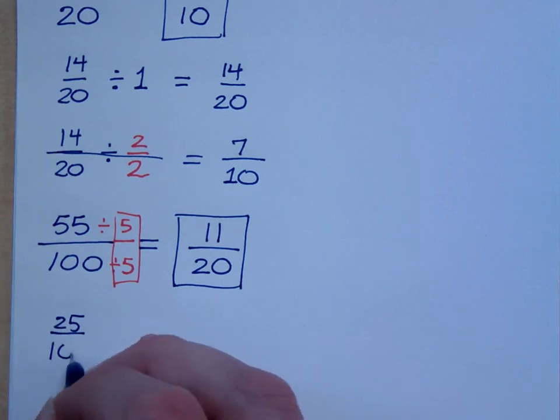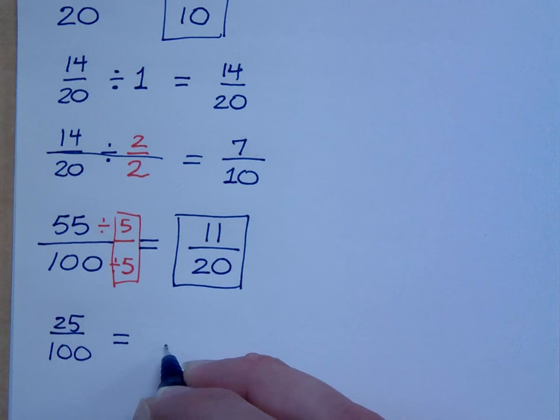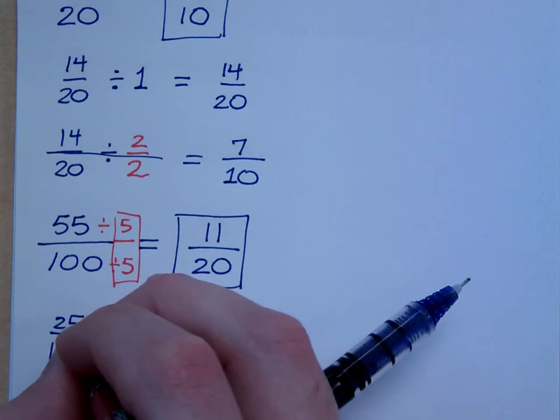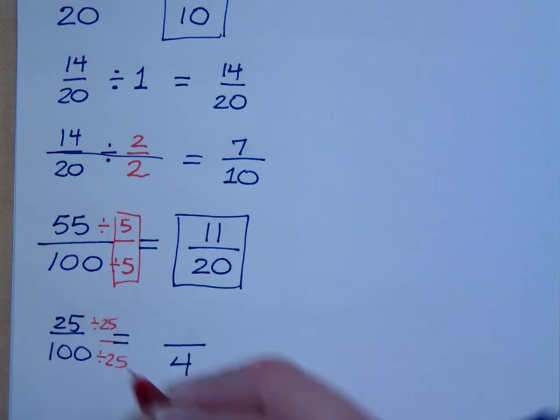Right? If you have 25 over 100, you can make that into something over 4, right? How do you go from a 100 to a 4? You divide it by 25. So, what's that numerator when you convert it? Isn't that just a 1?